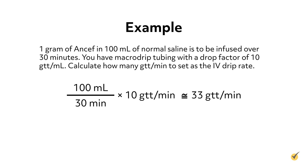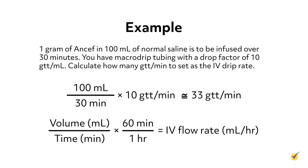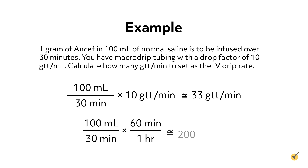If you need to set this up on an IV infusion pump, use the formula: volume in milliliters divided by time in minutes, multiplied by 60 minutes per hour. This equals the IV flow rate in milliliters per hour, which is the standard method of setting infusion rates on IV pumps. Using this formula: 100 milliliters divided by 30 minutes, times 60 minutes in one hour, equals 199.9, rounded to 200 milliliters per hour.